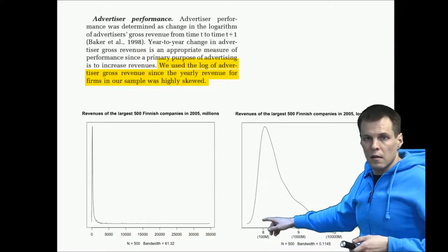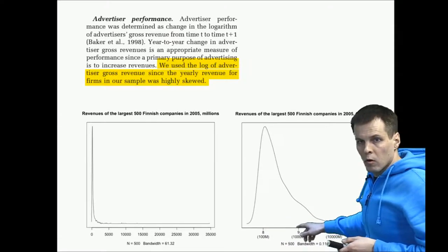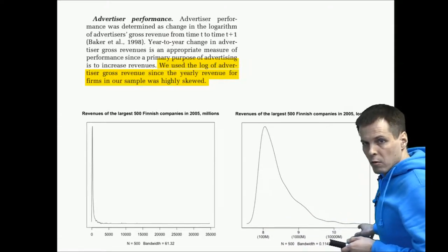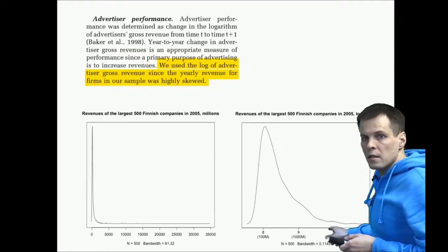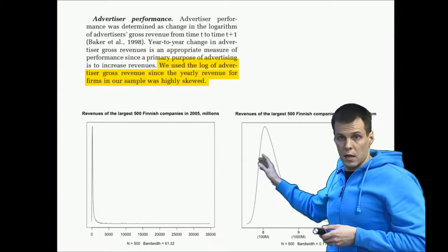So this is the 100 million threshold. This is the 1 billion threshold. Then we have 10 billion and then 100 billion threshold here. So we change the scale of the variable by taking a logarithm.